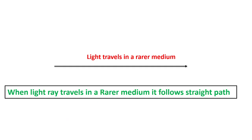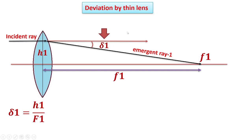When light travels in a rarer medium, no bending takes place unless there is an obstruction like a denser medium in its path — for example, a lens. When a light ray travels in a rarer medium it follows a straight path, but as soon as a lens is placed in that path, bending action takes place due to refraction. So deviation by a thin lens takes place.